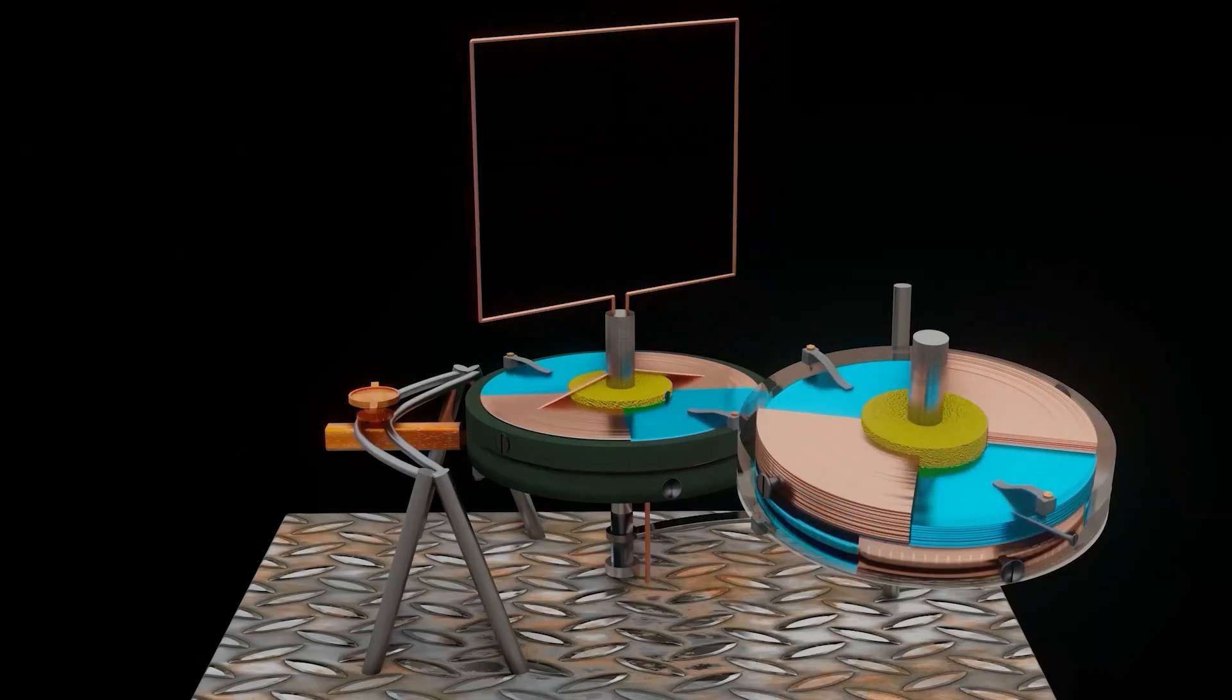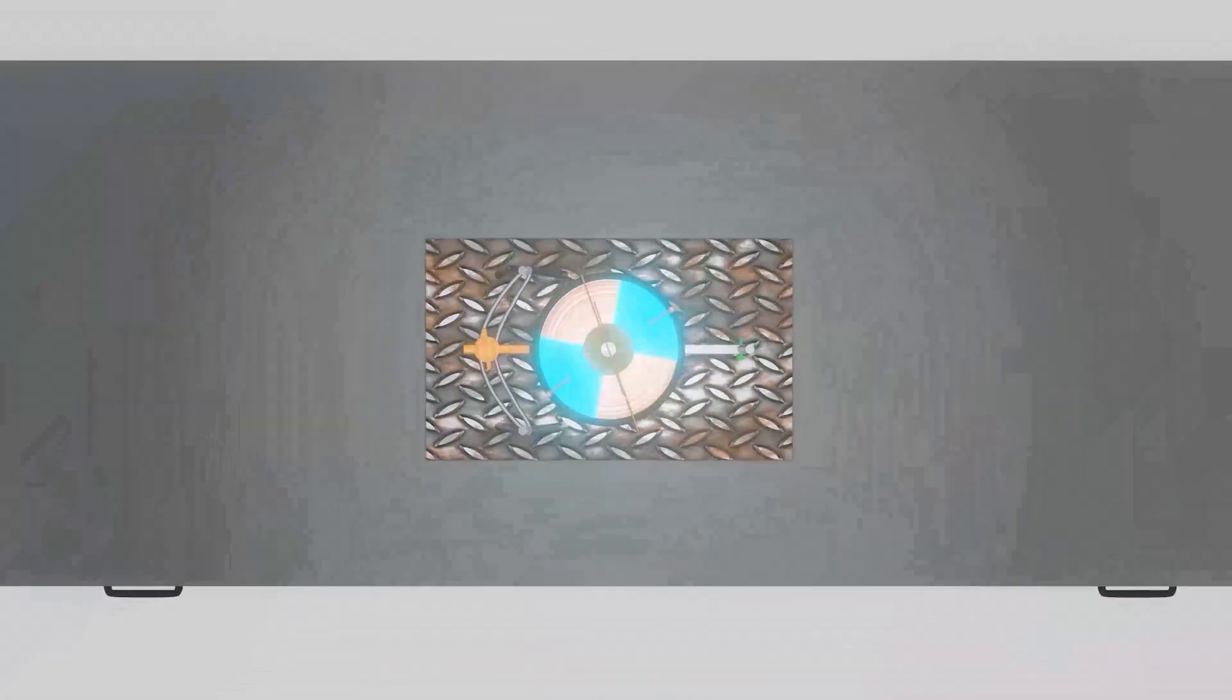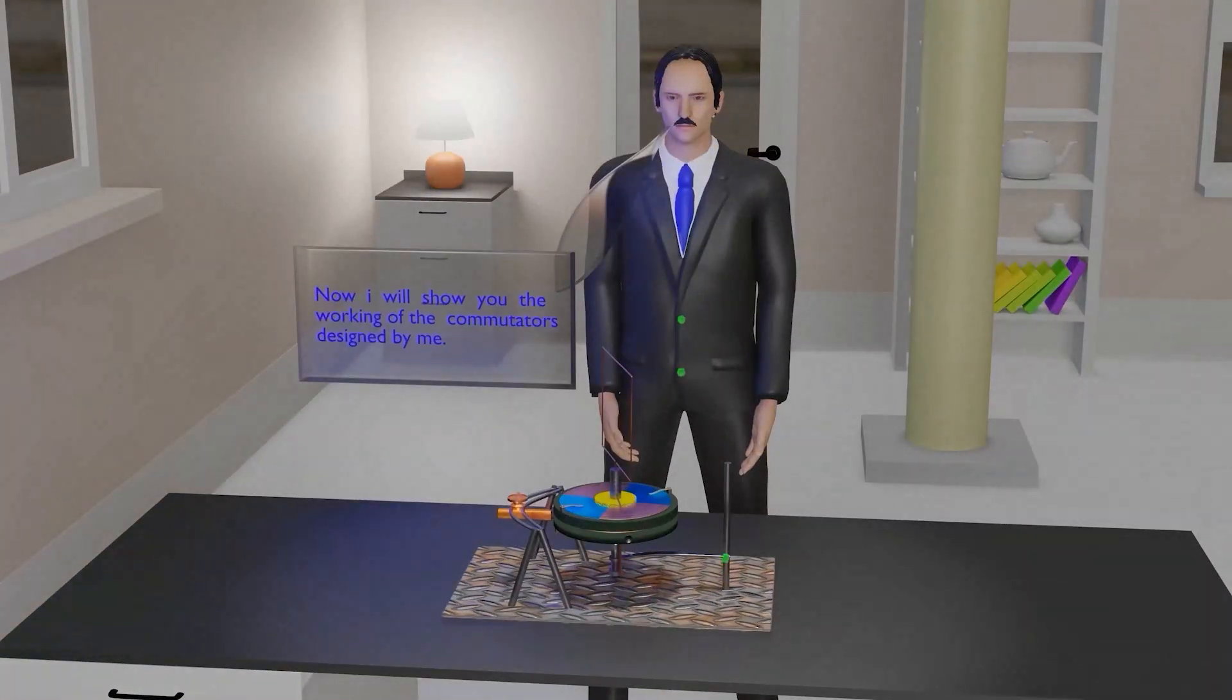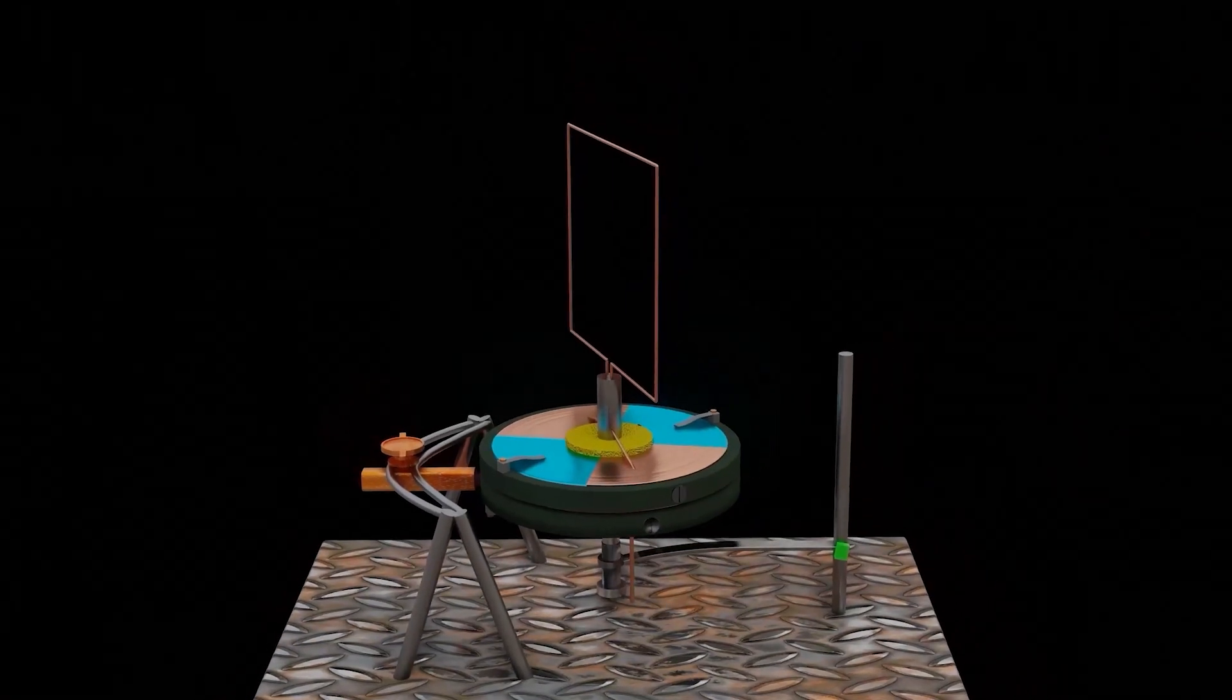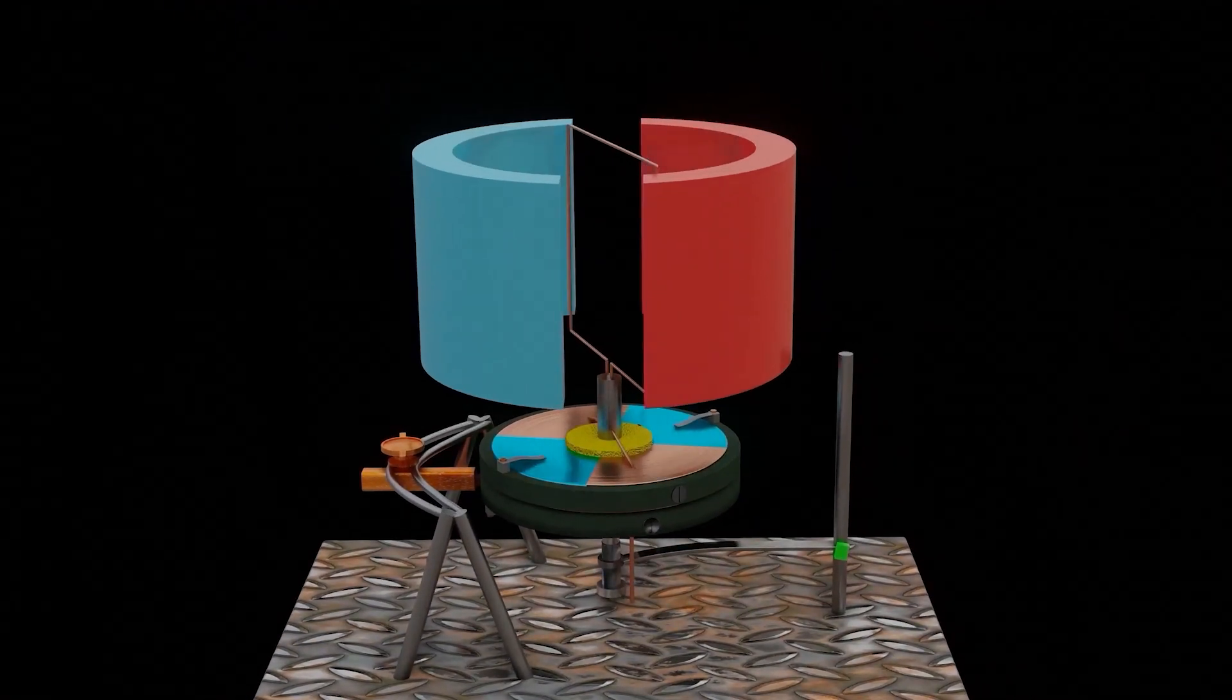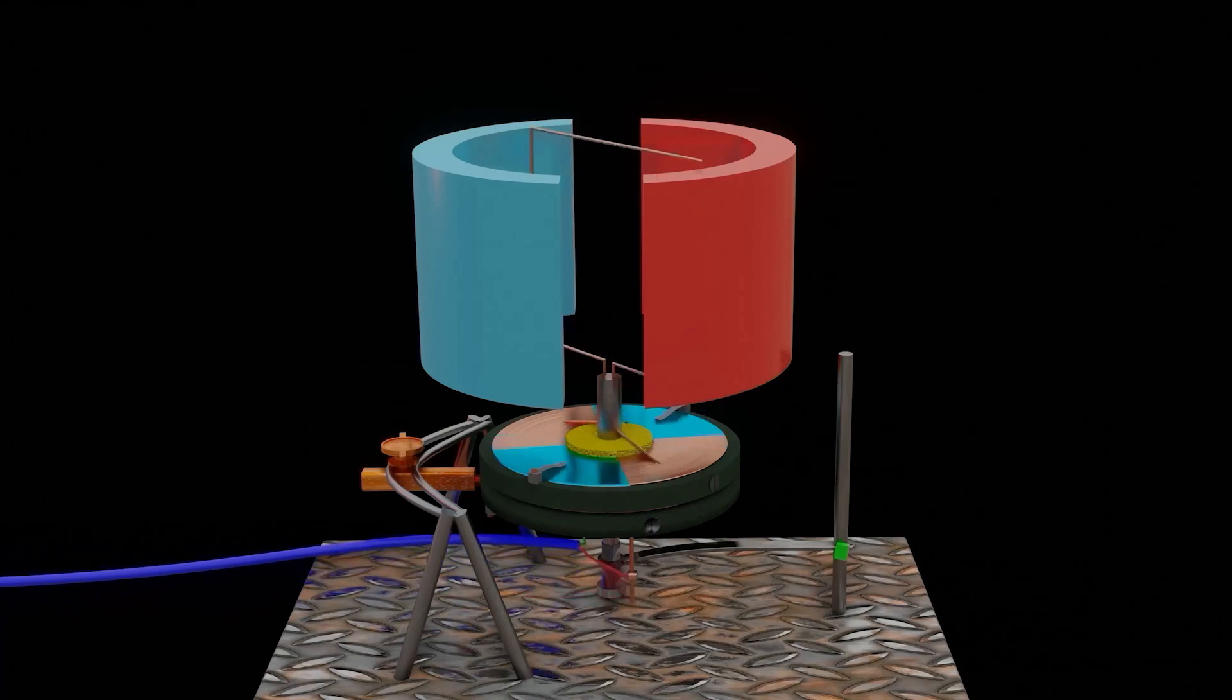The metal segment of the commutators may be moved forward by loosening the screws by which it is fixed to the shaft. Now, we will see the working of the commutator designed by Nikola Tesla. First, let us install two permanent magnets so that a magnetic field can be created around the coil of the armature. Now, when the electricity supply is given, the current flows to the commutator through the collector and the armature starts rotating.